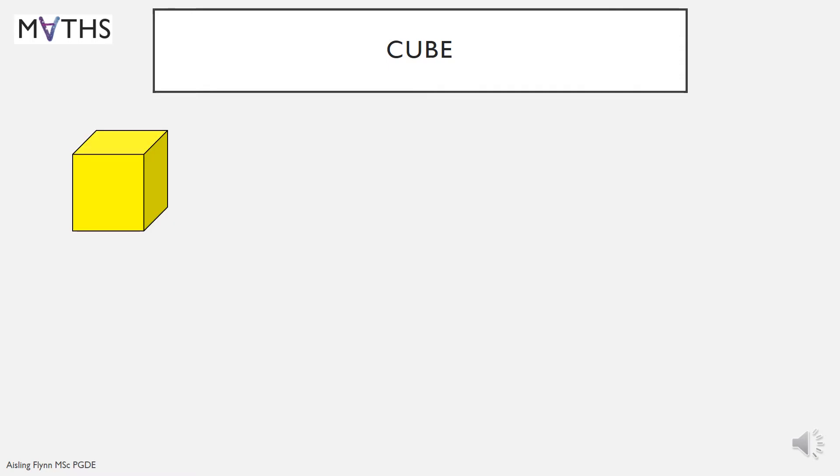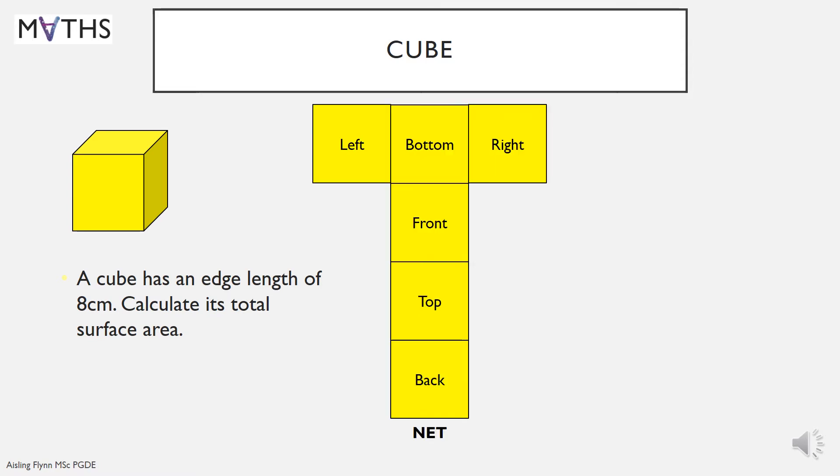Here's an example. A cube has an edge length of eight centimeters. Calculate its total surface area. So we imagine the net. We have six faces. Each of them are shaped like a square, meaning their length and their width are the same.